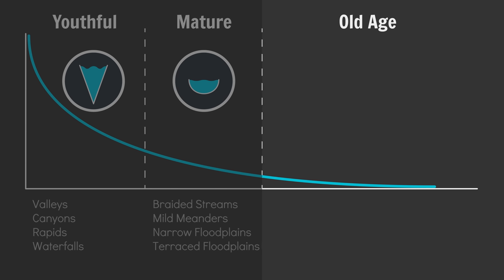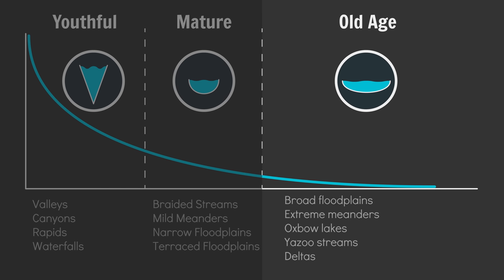Finally, the old stage is the final lowland stage of your river. The gradient of the land is shallow, the river's flow is slow, and the river channel is shallower and wider again. Expect broad floodplains, extreme meanders, oxbow lakes, yazoo streams, and deltas.